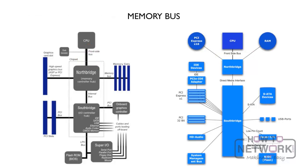The memory bus also connects to — that's right — the North Bridge. It's the fast speed that needs to go straight to that North Bridge, which has a closer connection to the CPU. The memory bus is where all the RAM plugs in, and we'll talk more about those memory slots in a later video.